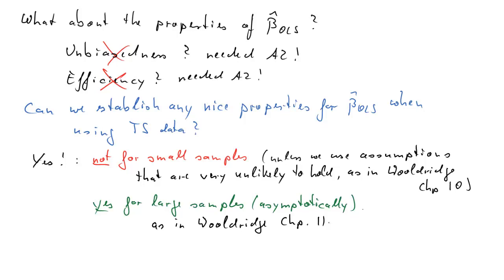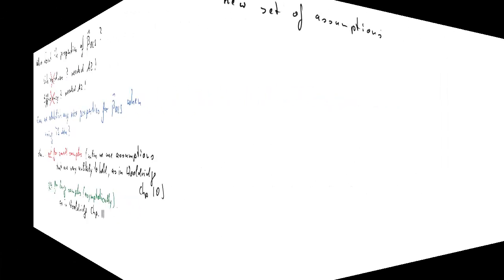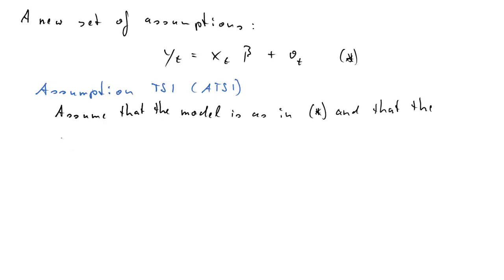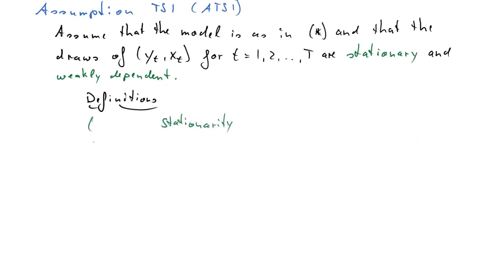That's the difference between chapter 10 and 11 in Wooldridge. So that's the approach we are going to take. We are going to look at what assumptions do we need to establish nice properties for our OLS parameter estimates. So we need a new set of assumptions. Our basic model is just replicated here again. Now, assumption 1, or time series assumption 1, this is now the crucial one. Assume that the model is as indicated above. And that the draws of the random variables yt and xt for all time periods t1 to capital T are stationary and weakly dependent. So this is the assumption which we need. What does this all mean? Let's look at the definition for stationarity, to be precise what we call covariance stationary.